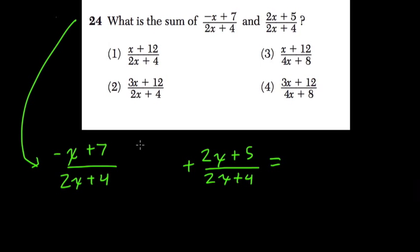When you're adding two fractions and they have the same denominator, what always happens? Well, what happens, of course, is that the denominator remains unchanged. It'll still be 2x plus 4.